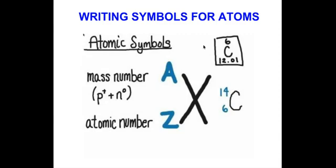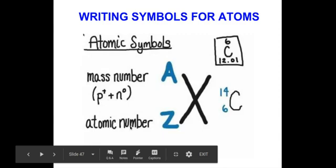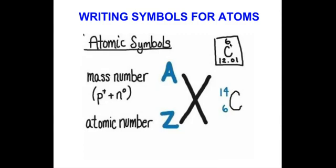Stick to the formula: mass number equals protons plus neutrons. The number of protons is determined by the atomic number, which you can see in the periodic table as the number on top of the symbol of the element.